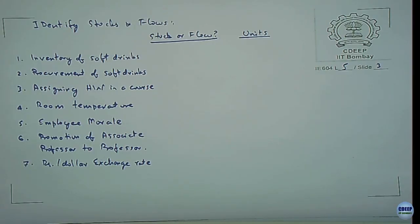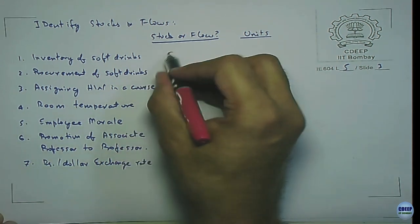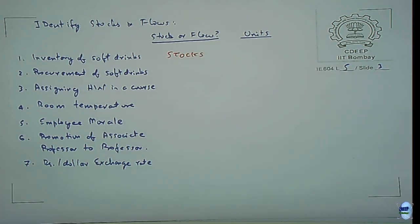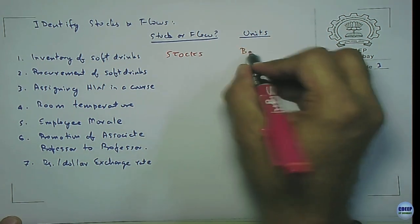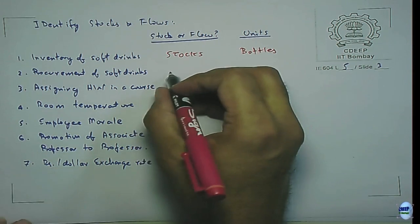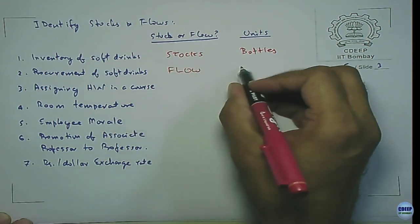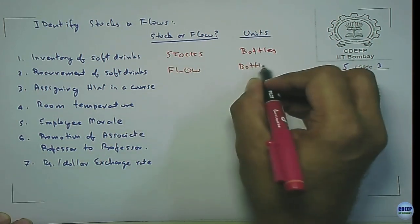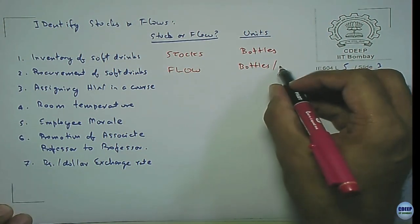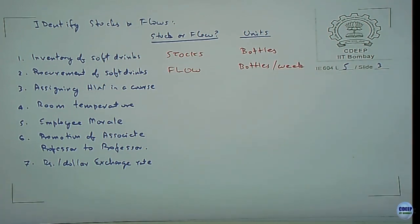Example: inventory of soft drinks — is it a stock or flow? It is a stock. What could its units be? Procurement of soft drinks is the flow — what could its units be? Bottles per some time period. If the shop is buying every week, you can put bottles per week.